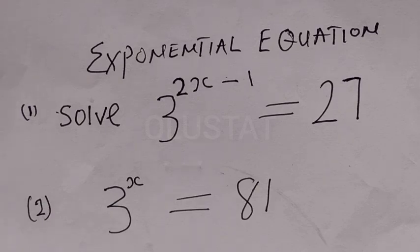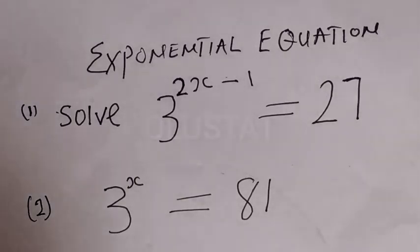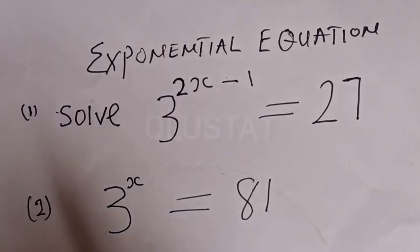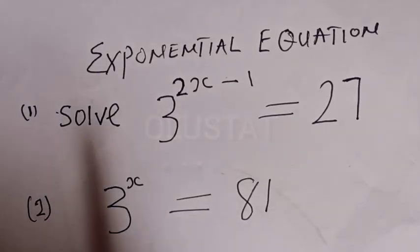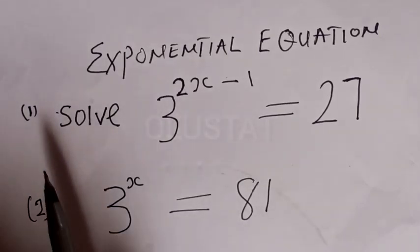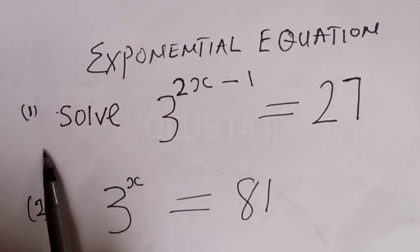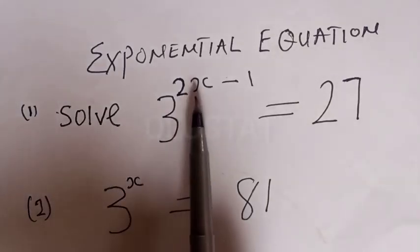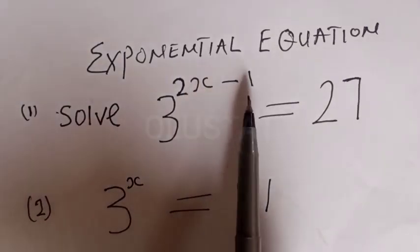Exponential equations are equations with variables in exponents. Today's class wants to look at how to solve exponential equations. Look at the first question: solve 3 raised to power 2x minus 1 is equal to 27.